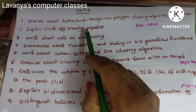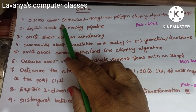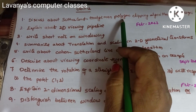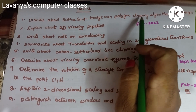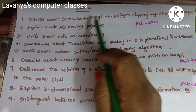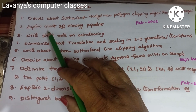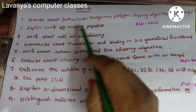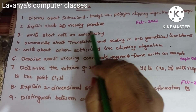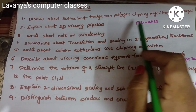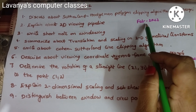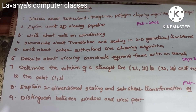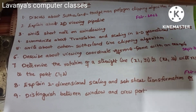Unit 2 important questions: First, discuss about Sutherland-Hodgman polygon clipping algorithm with an example. Second, explain about 2D viewing pipeline. Third, write short notes on windowing. These all came in February 2022. The Sutherland-Hodgman algorithm is a very very important question.